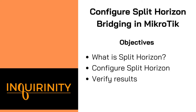The basic idea of split horizon bridging is to make traffic that is arriving over some port never be sent out on the same set of ports, thus preventing bridging loops from happening, especially if you opt not to run a spanning tree protocol.